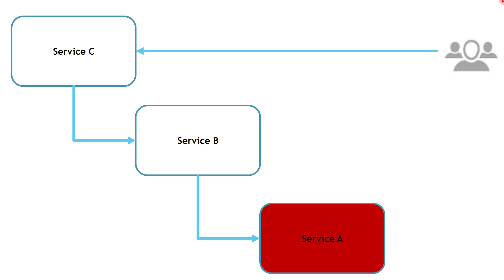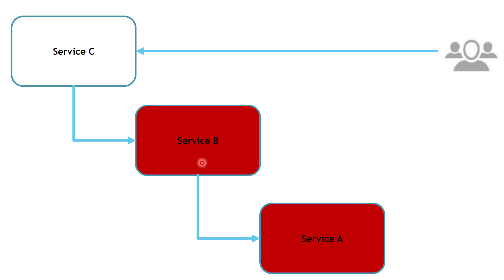Someone might say, as we are implementing Service-Oriented Architecture and we have our solution built in different services, we should be fine — we have only one service down, but other services are up and running. But unfortunately this is not the case. Because Service B is continuously trying to reach Service A to get the data, and sooner or later Service B is going to run out of resources, because all of Service B's resources are going to be exhausted trying to reach Service A, which is not available anymore. So sooner or later, Service B will also become unavailable, just like Service A.